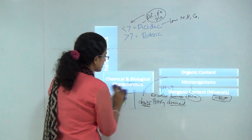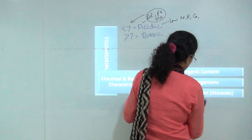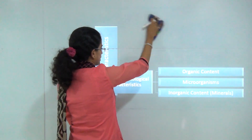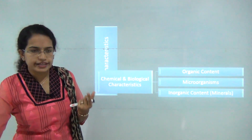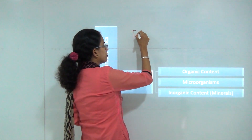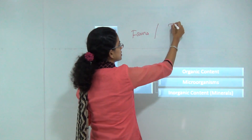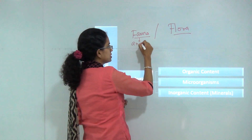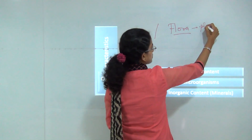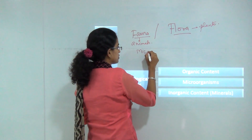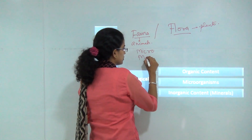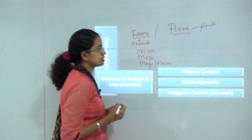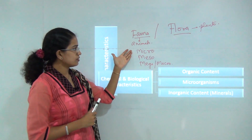Next we cover chemical and biological characteristics. Under biological characteristics, we focus on the role of microorganisms. Any living characteristic in the form of animal life is known as fauna, while plant life is known as flora. We also introduce the terms micro, meso, and macro — so you have micro fauna, meso fauna, and macro fauna.